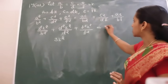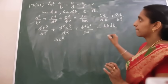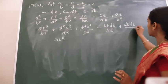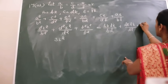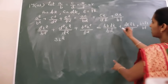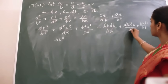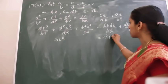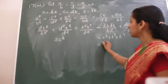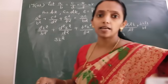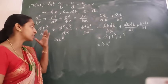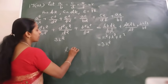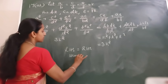Similarly for the RHS side: BK · DK upon BD, plus DK · FK upon DF, plus BK · FK upon BF. B and D cancel, D and F cancel, giving K squared plus K squared plus K squared in RHS as well — so 3K squared. LHS equals RHS, hence proved.